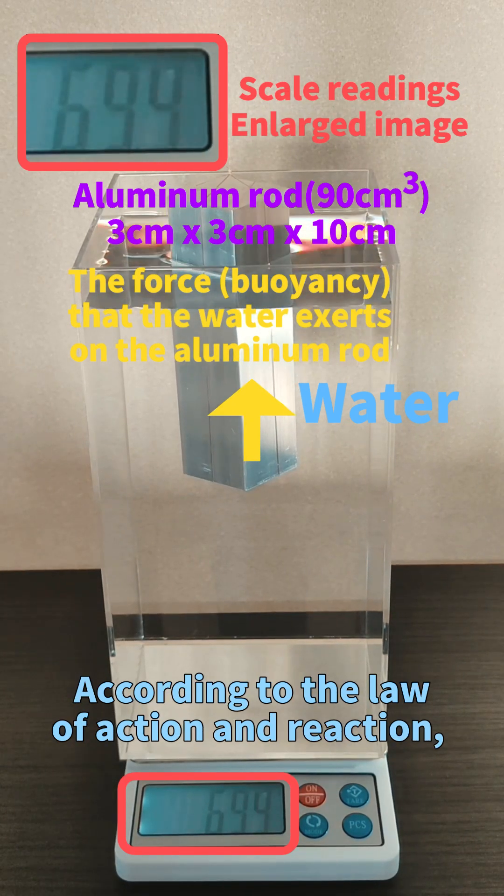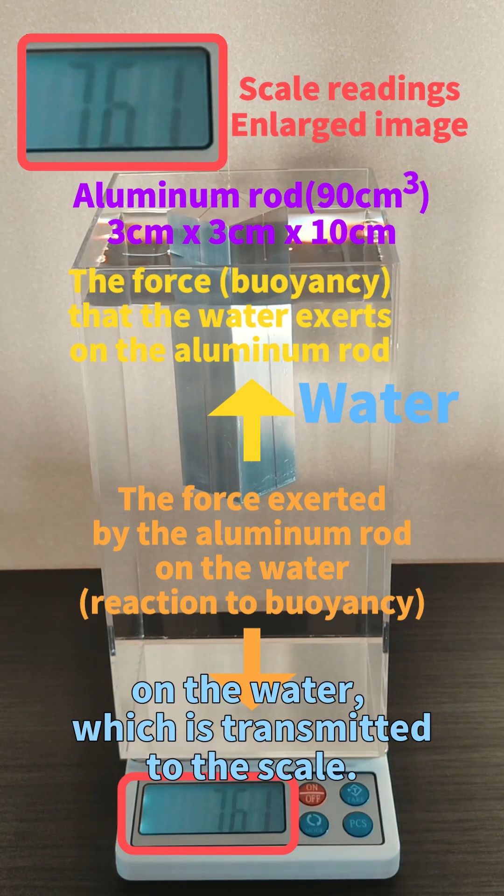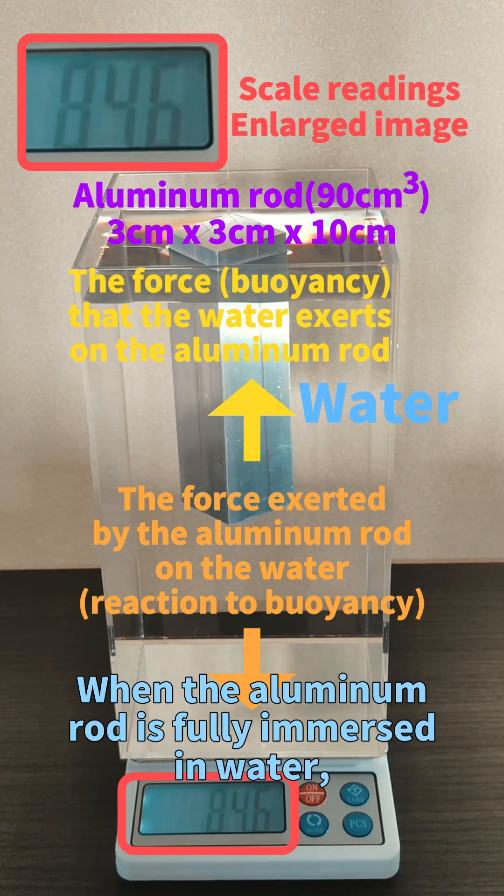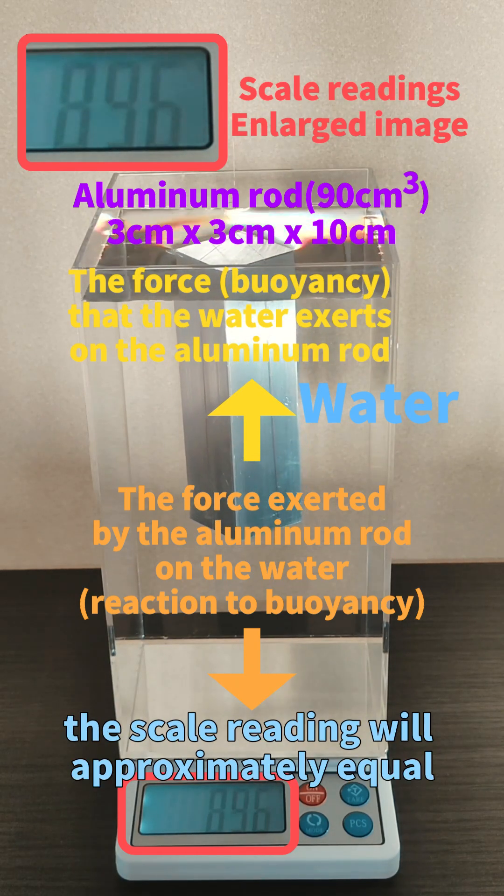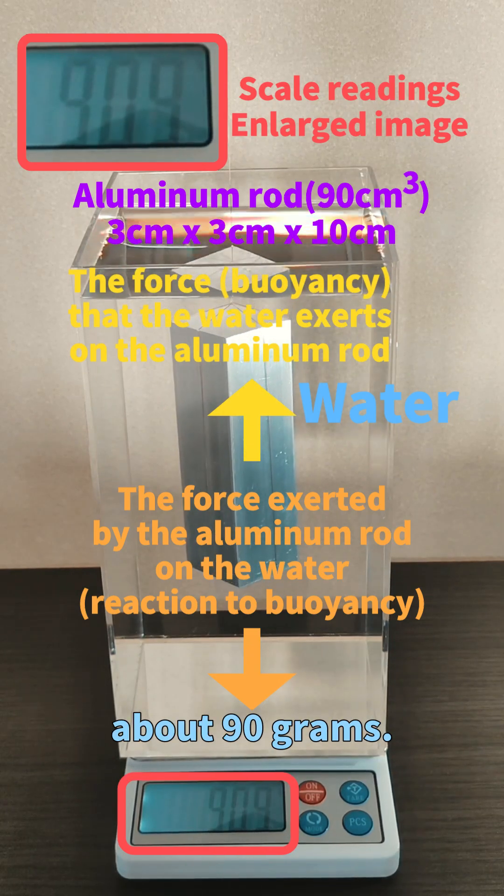According to the law of action and reaction, the rod exerts an equal downward force on the water, which is transmitted to the scale. When the aluminum rod is fully immersed in water, the scale reading will approximately equal the weight of the displaced water, about 90 grams.